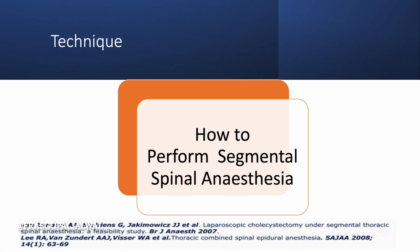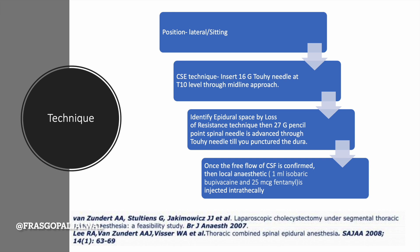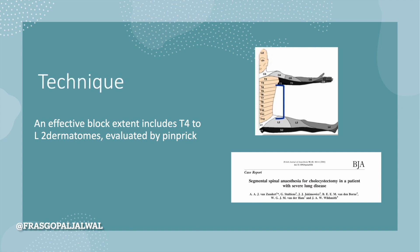What is the technique? How to perform Segmental Spinal Anesthesia? The technique was explained by Van Judwet in that case report. Aseptic precautions should be used, and the position can be either lateral or sitting. Insert a 16-gauge Tuohy needle at T10 level through the midline approach and identify the epidural space by loss of resistance technique. Then a 27-gauge pencil point spinal needle is advanced through the Tuohy needle until the dura is punctured. Once free flow of CSF is confirmed, 1 ml isobaric bupivacaine 0.5% and 25 mcg fentanyl is injected intrathecally. The effective block extends from T4 to L2 dermatome, evaluated by pinpricks.